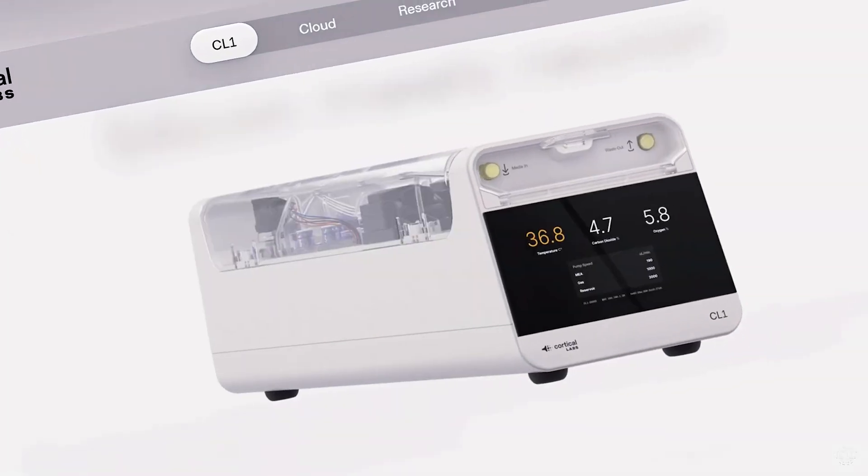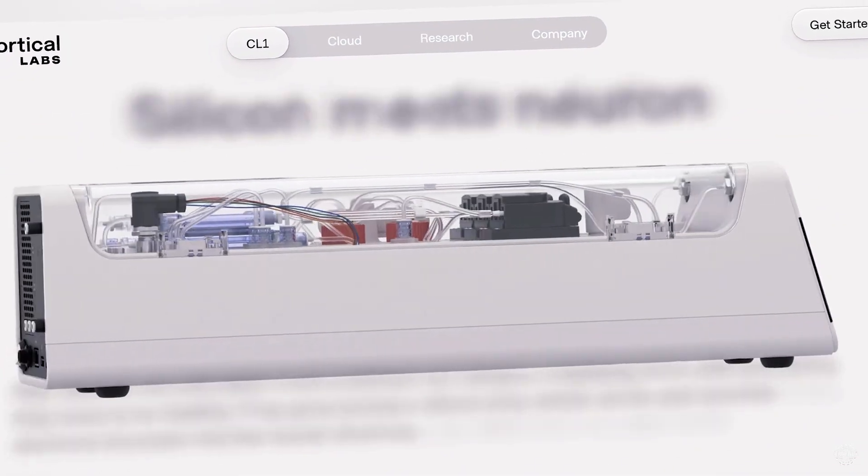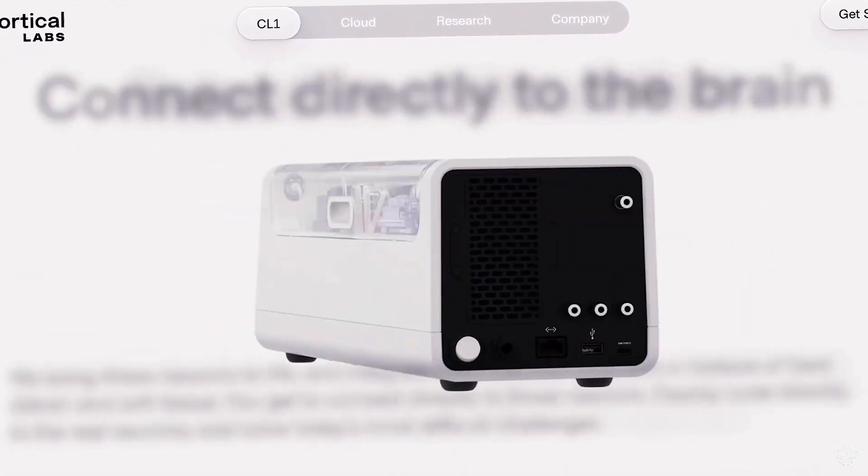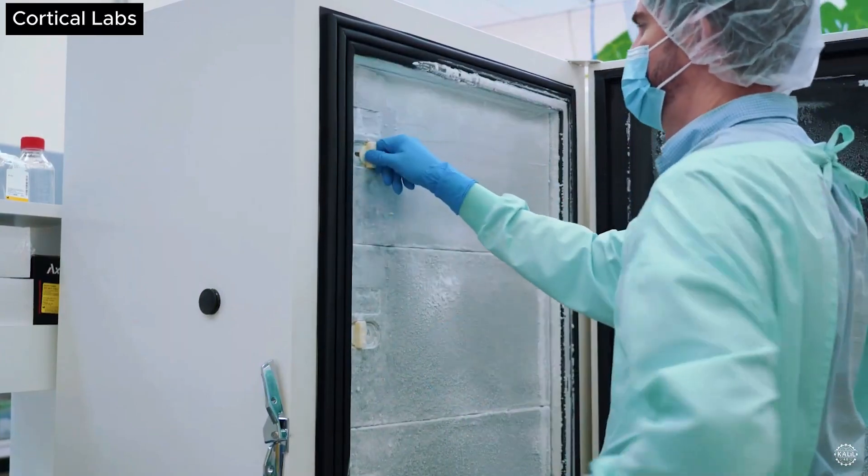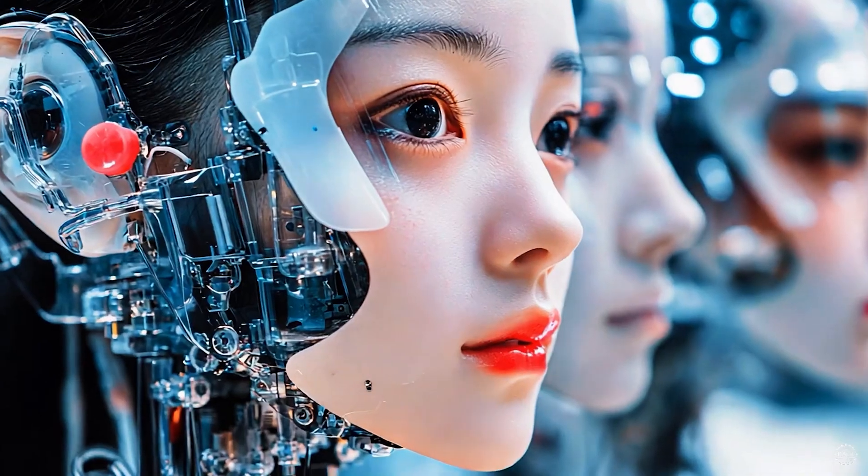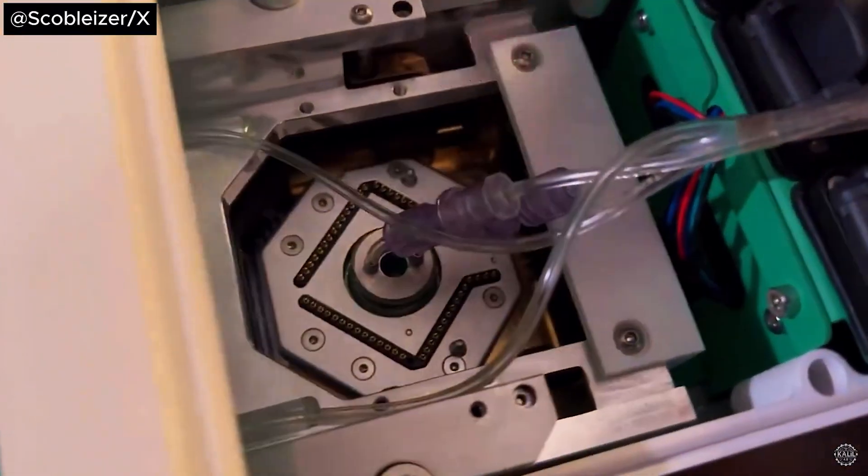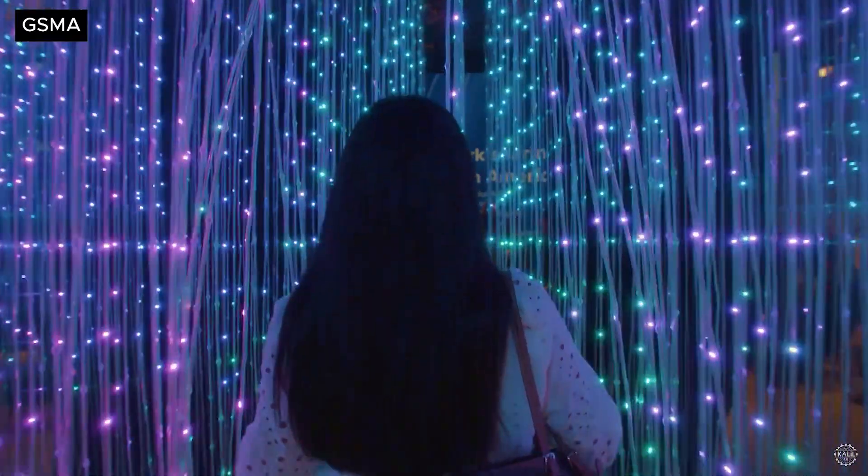This incredible technology, called the CL1, was developed by the Australian company Cortical Labs and is set to change the future of artificial intelligence. Unlike regular AI systems, the CL1 is more flexible, learns faster, uses less energy, and is far more efficient than anything available today.